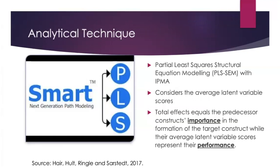Now, we'll briefly consider the analytical technique of partial least squares structural equation modeling, which allows for estimating complex cause-effect relationship models. One should use this method of analysis when the goal of the research is predicting key target constructs or identifying key driver constructs. In terms of the results, we'll be looking at the total effects and average latent variable scores. The total effects represent the predecessor construct's importance in the formation of the target construct, while the average latent variable score represents the performance.